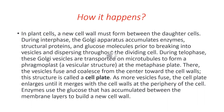Enzymes use the glucose accumulated between the membrane layers to build a new cell wall. So in plant cells, the Golgi apparatus accumulates enzymes, structural proteins, and glucose molecules before breaking into vesicles. During telophase, these vesicles are transported to form a phragmoplast, and they then fuse to form the structure called the cell plate. This is how cytokinesis happens in plant cells.